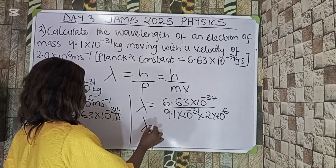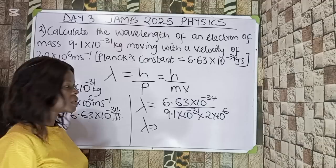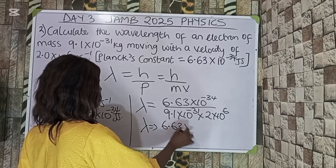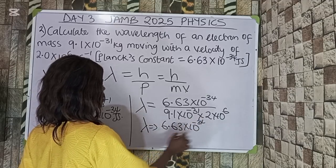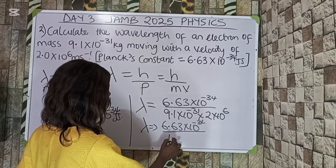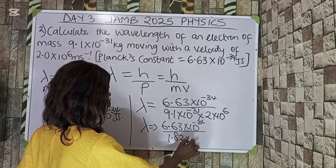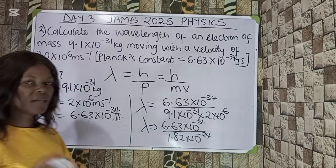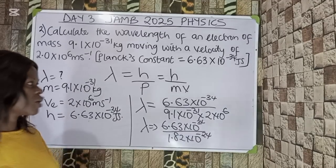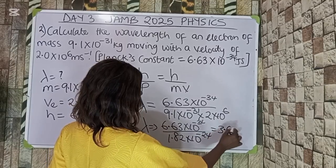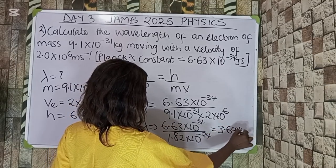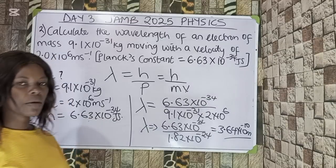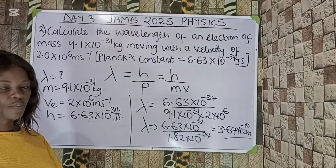Working it out, lambda equals 6.63×10⁻³⁴ divided by 1.82×10⁻²⁵. Dividing gives us 3.64×10⁻¹⁰ meters. That becomes our wavelength. This is how to solve this kind of problem.